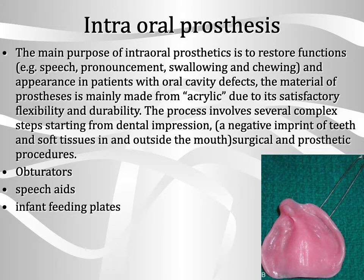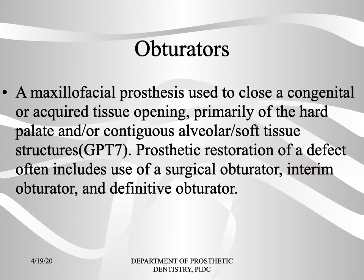The main purpose of intraoral prosthetics is to restore function and appearance in patients with oral cavity defects. The material is mainly acrylic due to its satisfactory flexibility and durability. The process involves complex steps starting from dental impression to surgical and prosthetic procedures. The types of intraoral prostheses include obturators, speech aids, and implant feeding plates. Obturators are maxillofacial prostheses used to close a congenital or acquired tissue opening, primarily of the hard palate or alveolar soft tissue structures, and their fabrication often includes a surgical obturator, interim obturator, and definitive obturator.